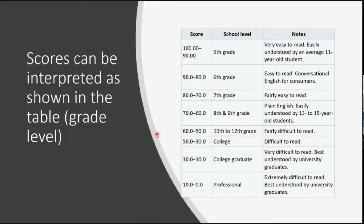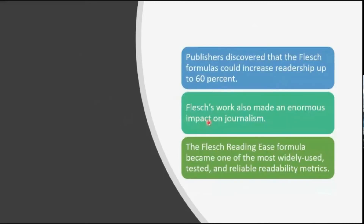Most English magazines and newspapers test their readability level, and it is now very popular in journalism. After the Flesch Reading Ease score was applied in journalism, editors observed a very good impact. They tested text on the basis of readability, modified it according to their audience, and found that after using the readability score, readership increased by up to 60 percent. Earlier the text was not understandable for all, but after applying the readability score, more readers became interested in reading the newspaper.